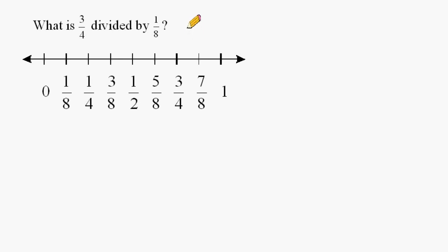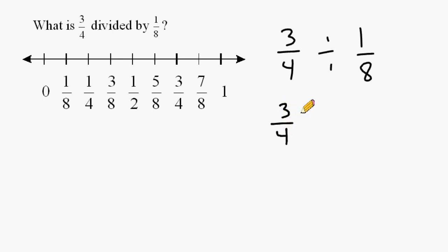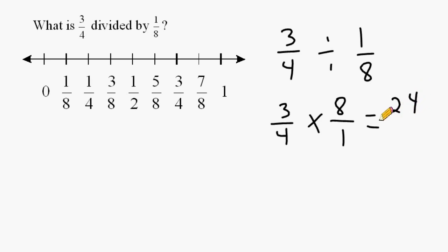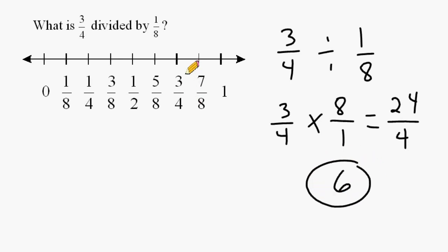For this problem, we have to figure out what is 3 quarters divided by 1 eighth. We rewrite 3 fourths exactly as it is, change division to multiplication, and write 1 eighth as its reciprocal, which is 8 over 1. Now, if you happen to not notice that you can cancel out some numbers, you may simply multiply the numerators straight across to get 24, and do the same with the denominators — 4 times 1 is 4. If you end up with an improper fraction, you simplify by dividing the numerator by the denominator: 24 divided by 4 is equal to 6.